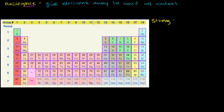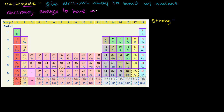Any nucleophile will have to have some kind of excess electrons — either a full negative charge, which is the case for strong and medium nucleophiles, or maybe a partial negative charge, which might be the case for weak nucleophiles. In general, it's going to have some type of excess electrons, and that's usually the case with things that are pretty electronegative. So it has to be electronegative enough to have gotten an electron to give away.